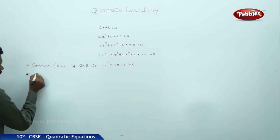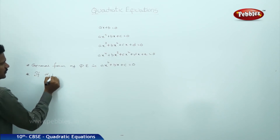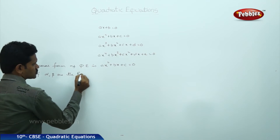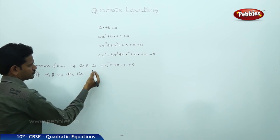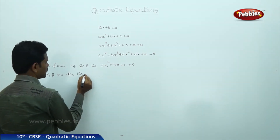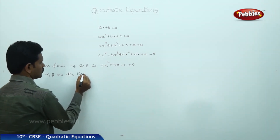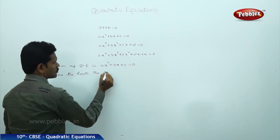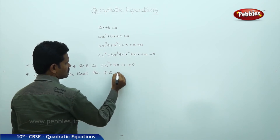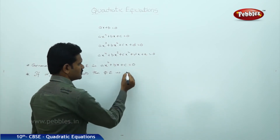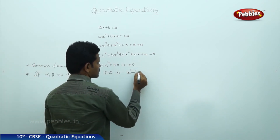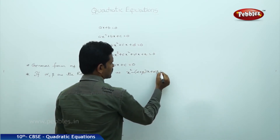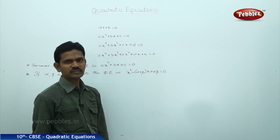If alpha and beta are the roots, then the quadratic equation is x squared minus (alpha plus beta)x plus alpha·beta equal to 0.